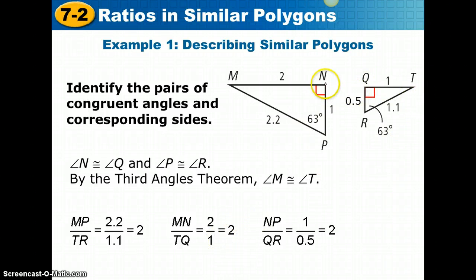And then the shorter leg NP to the shorter leg QR, 1 to 0.5, is also the ratio 2. And so these are proportional. They all equal the same ratio, 2 over 1.